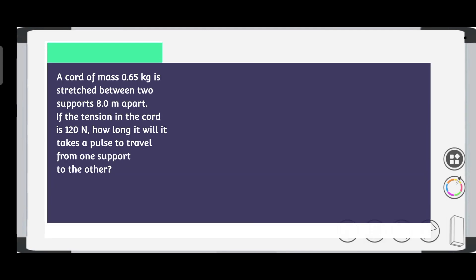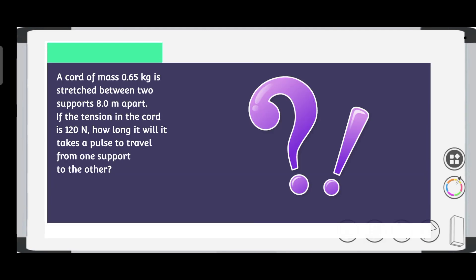A cord of mass 0.65 kg is stretched between two supports 8 meters apart. If the tension in the cord is 120 N, how long will it take a pulse to travel from one support to the other?